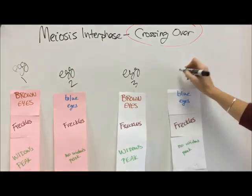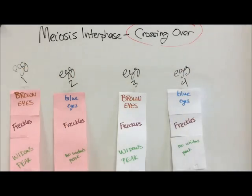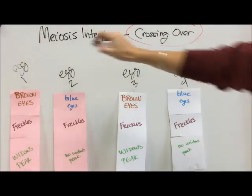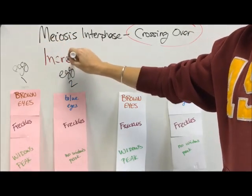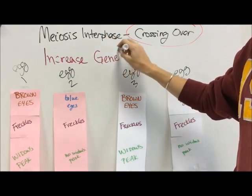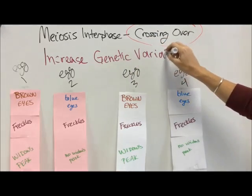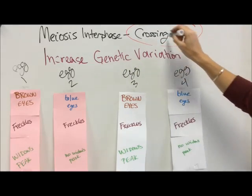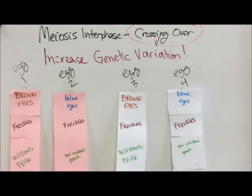It just shakes up all the genetic information. So then these would further separate, so you would have egg one, egg two, egg three, egg four, and each egg then has a different set of information. The next time that the body would go through this, it would exchange information at totally different places. This increases genetic variation.